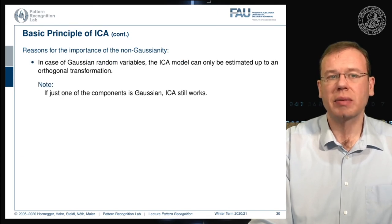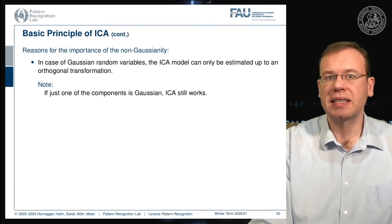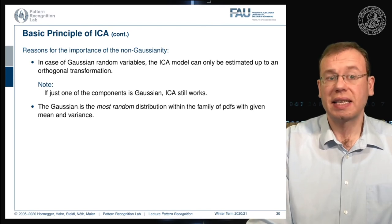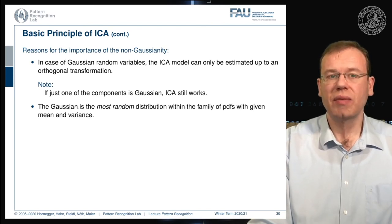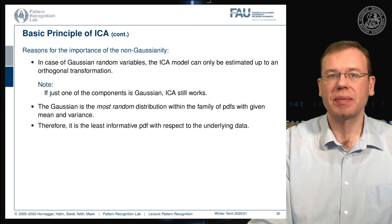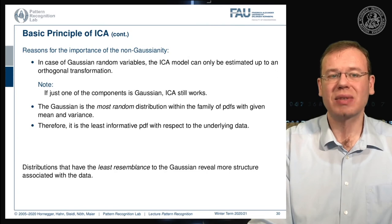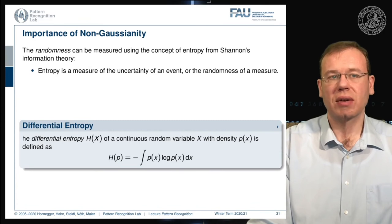This brings us to why non-Gaussianity matters for ICA. For Gaussian random variables, the ICA model can only be estimated up to an orthogonal transform — though if just one component is Gaussian, ICA will still work. The Gaussian is the most random distribution for a given mean and variance, making it the least informative. Distributions least resembling the Gaussian reveal more structure in the data.